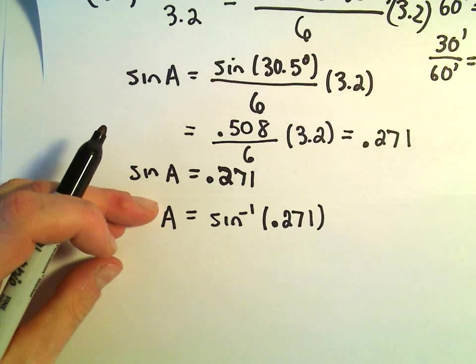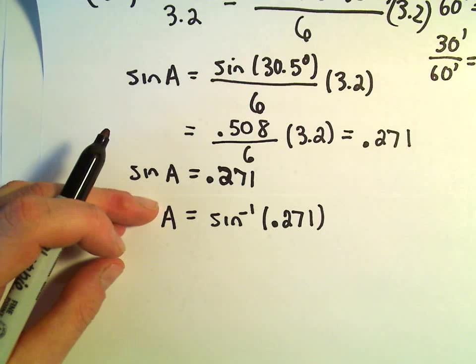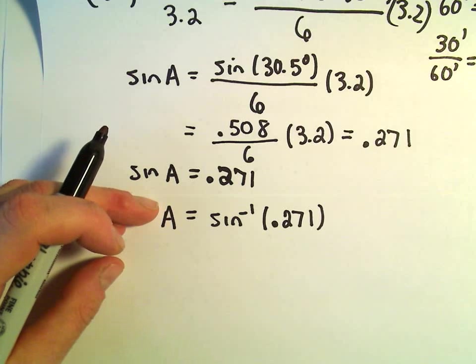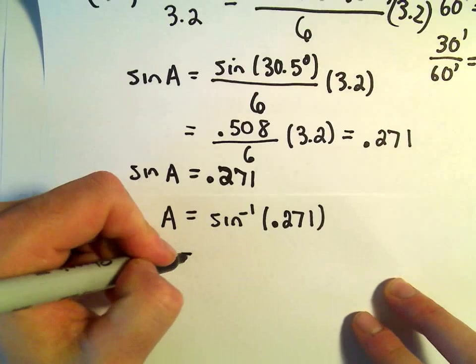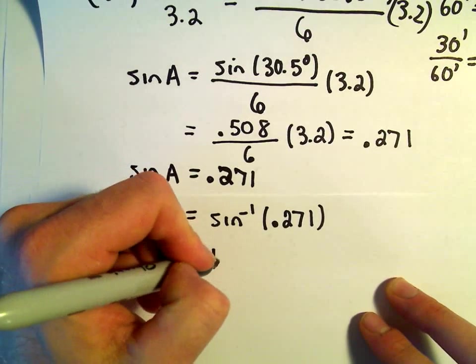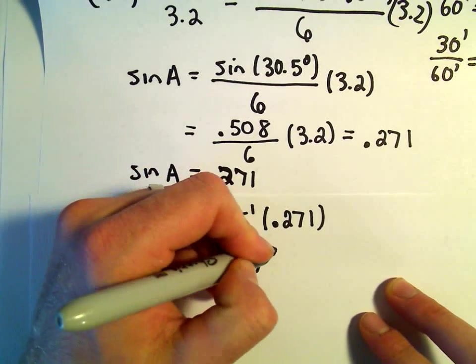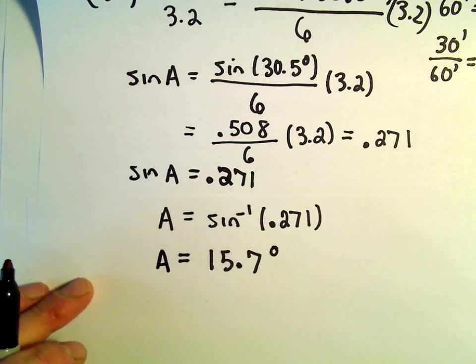So let me throw this in the calculator. .271 inverse sine. I'm getting A to be roughly equal to 15.7 degrees after rounding here a little bit.